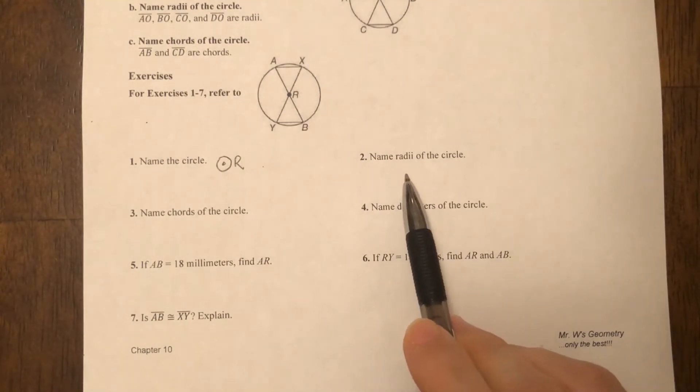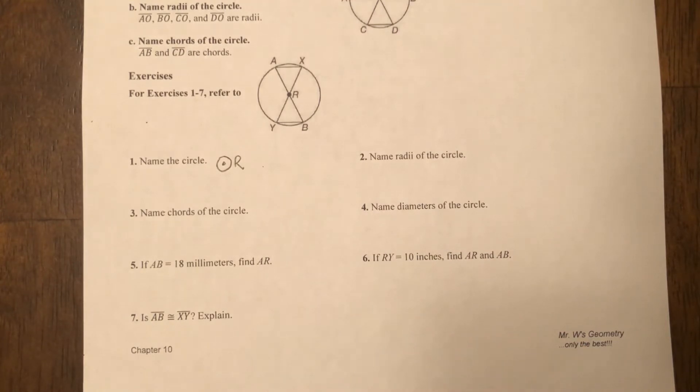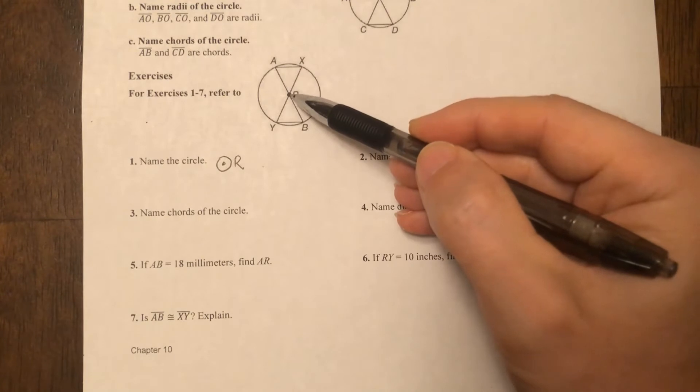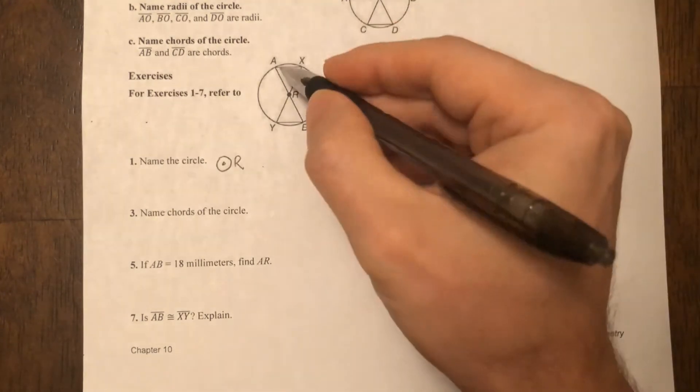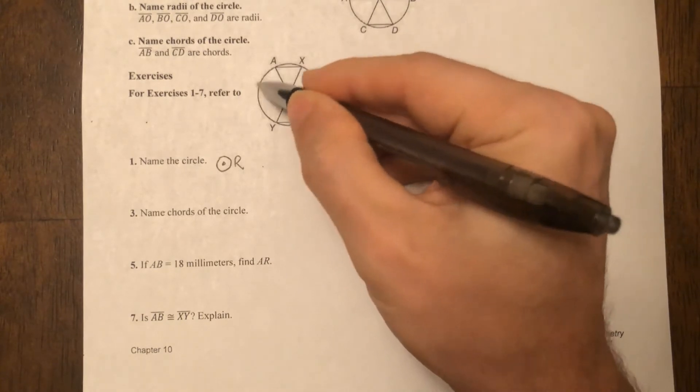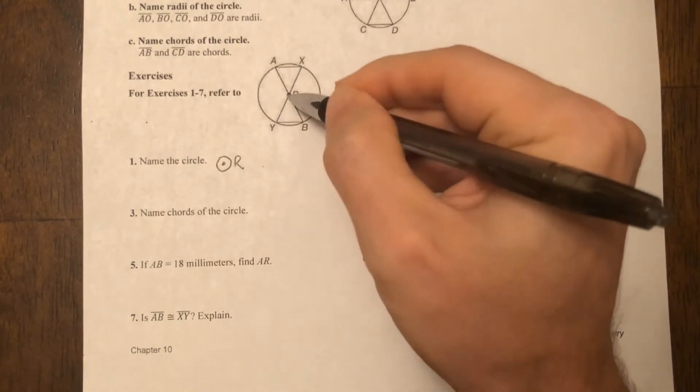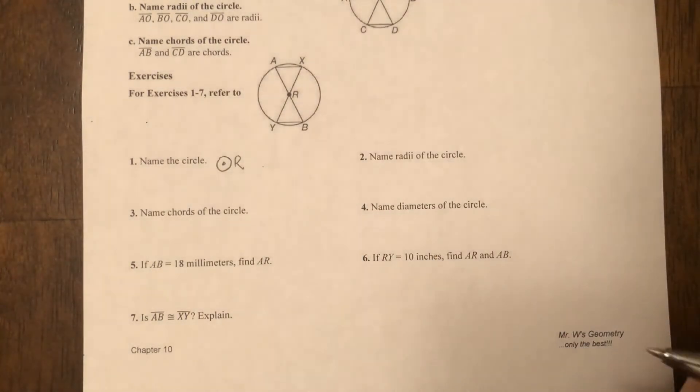This question says name the radii of the circle. Radii is plural for radius, so that means they want all of them. When we look at this circle, you have to remember what a radius is. A radius is a segment and it goes from the center of the circle to the circle itself. When I say to the circle itself, I mean this round hoop that's going around the dot in the center. That's what the circle is.